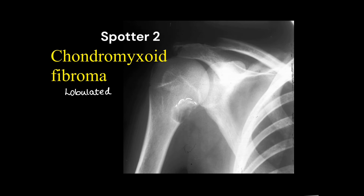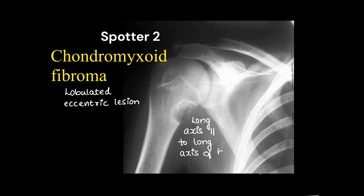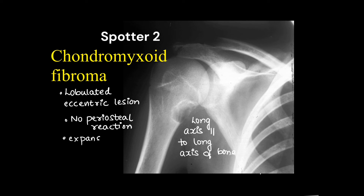Here we have chondromyxoid fibroma of the humerus. This is a lobulated lesion which is eccentrically present, and the long axis of the lesion is always parallel to the axis of the bone. In chondromyxoid fibroma, there will be no periosteal reaction and it is an expansile lytic lesion.